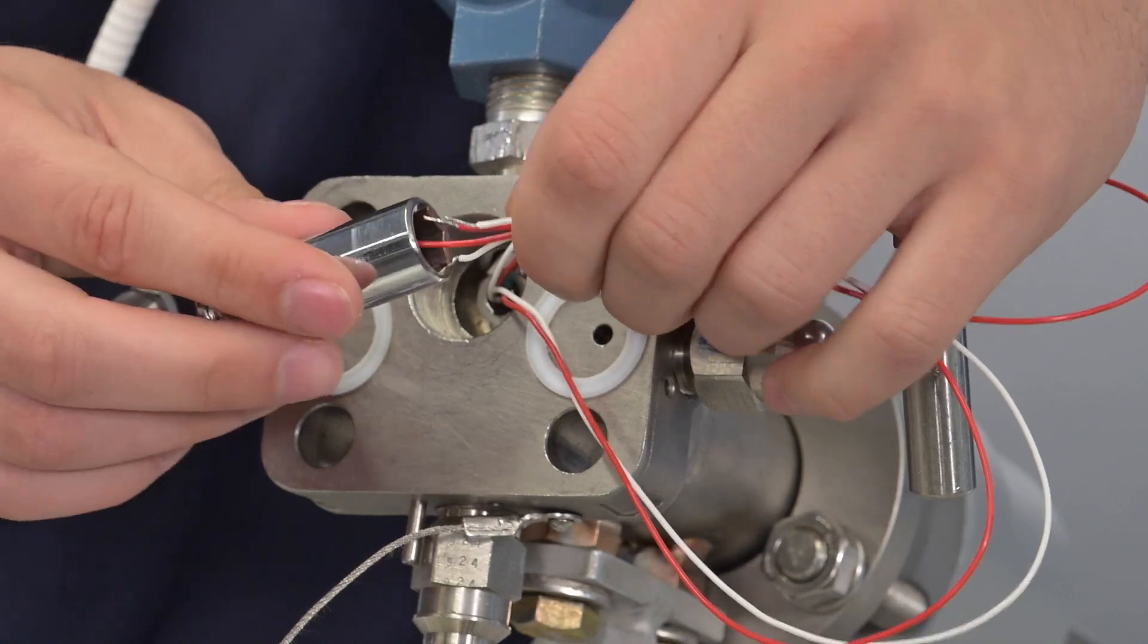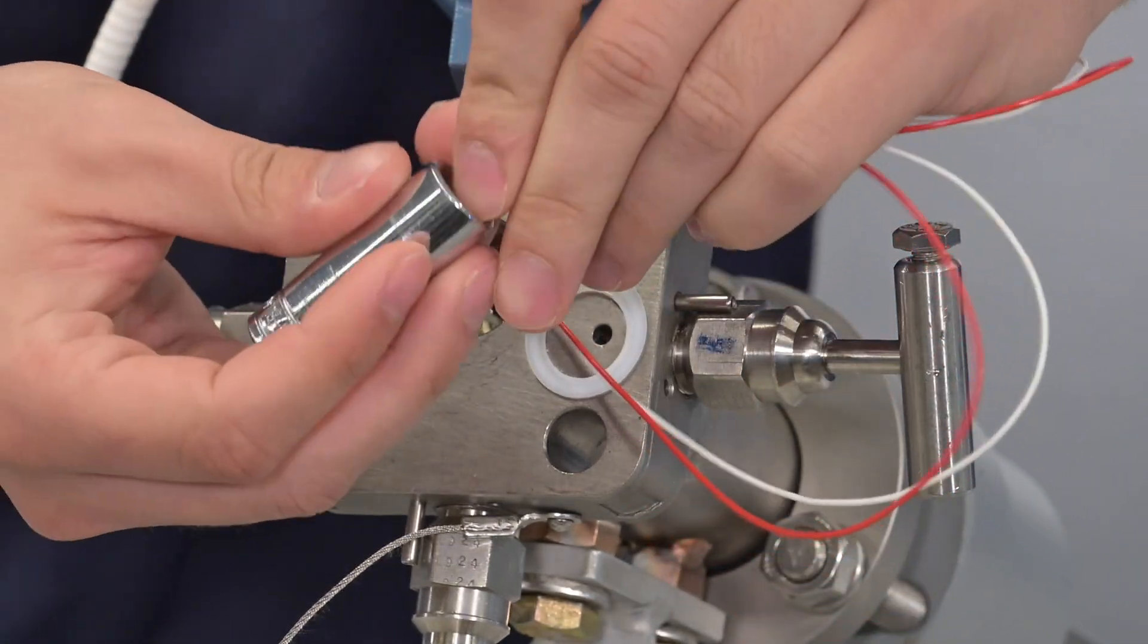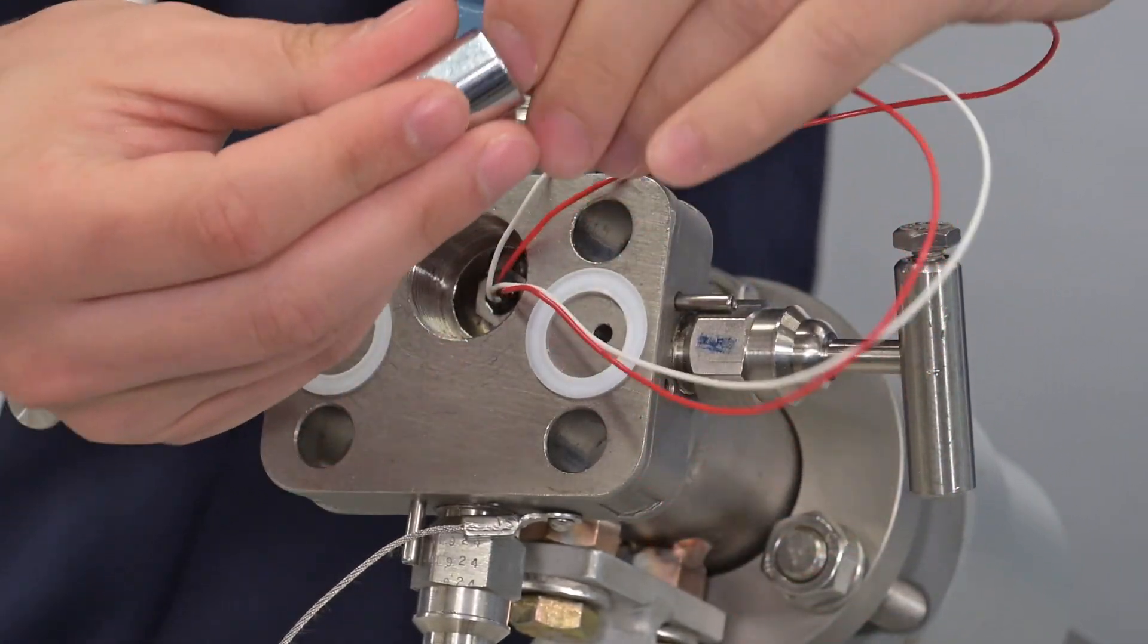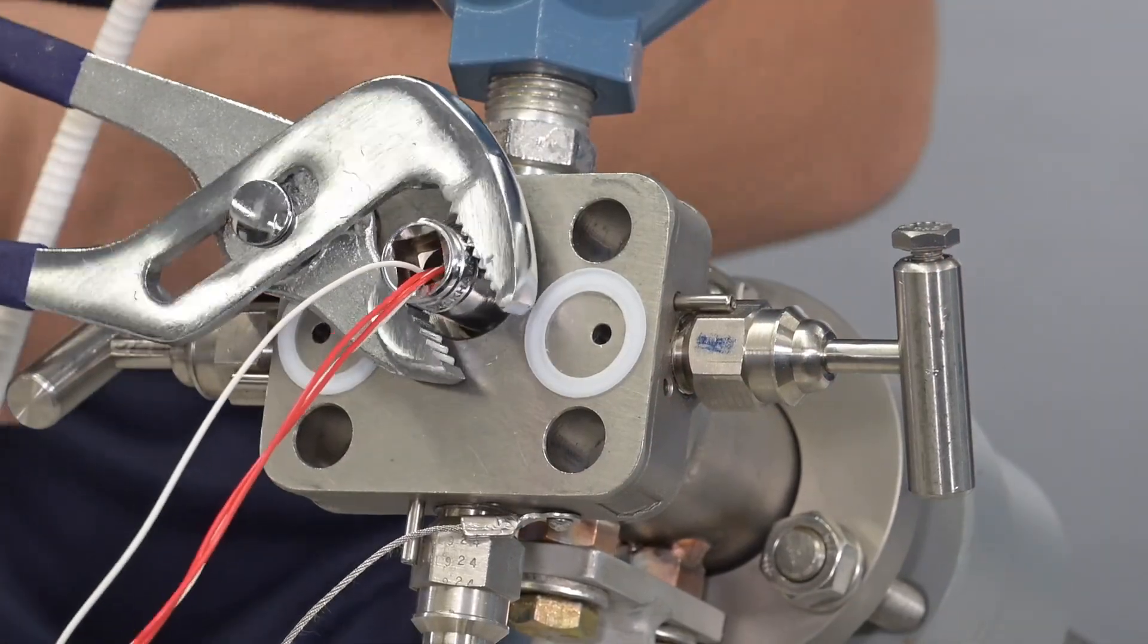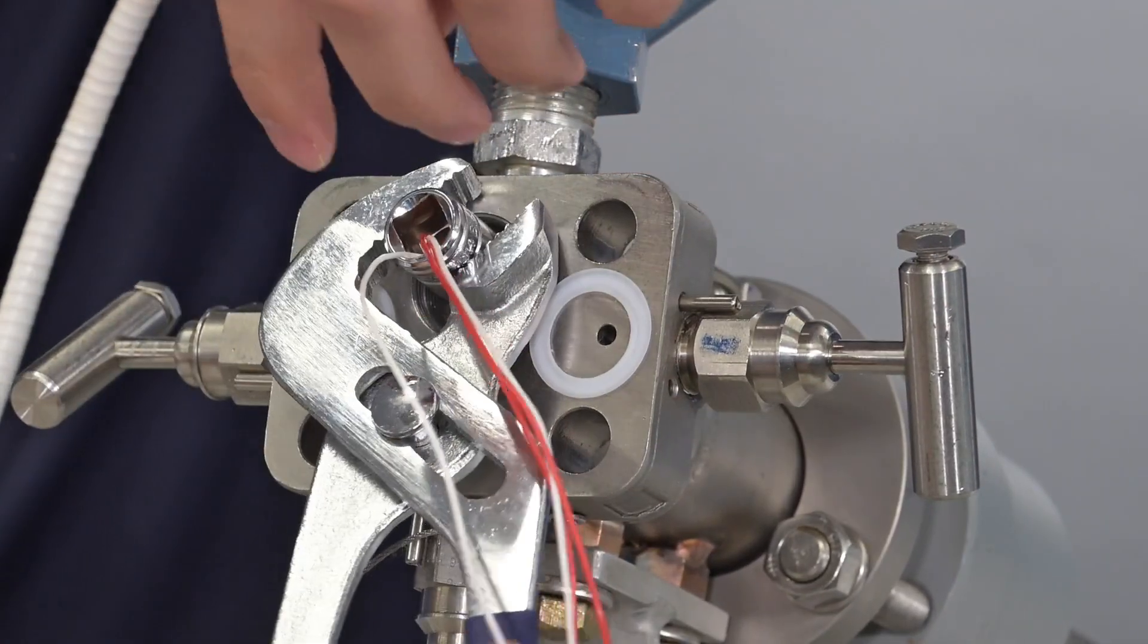Loosen and remove the RTD by inserting wires through a 7-16 inch or 11 millimeter deep socket. Then use pliers to rotate the socket and loosen the hex nut.